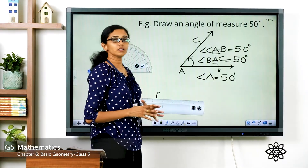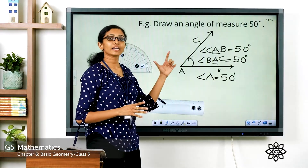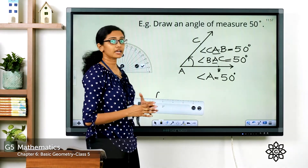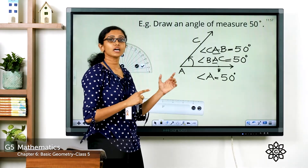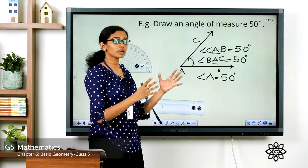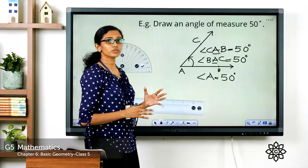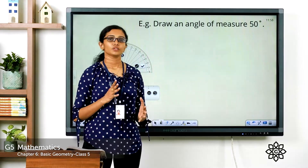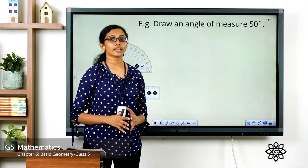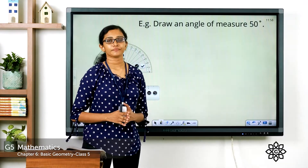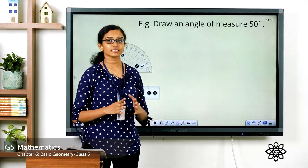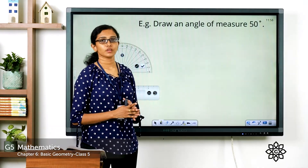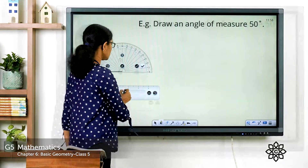We have drawn this angle using the inner scale of the protractor. Now let's see how we can draw the same angle using the outer scale — both are correct. To draw an angle using the outer scale, the steps are the same but the lower arm will be pointed towards the left.